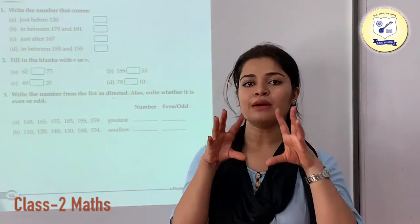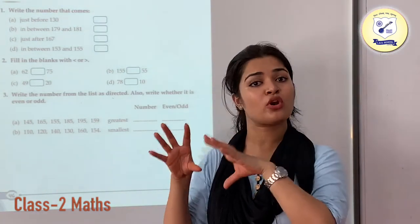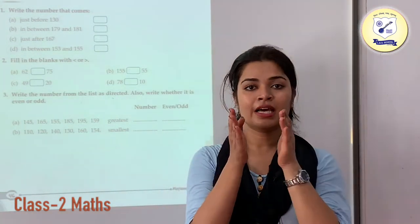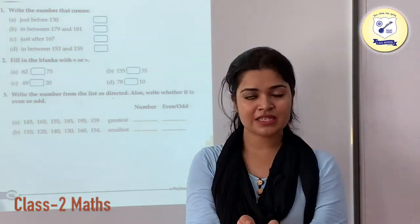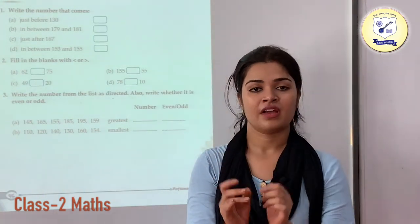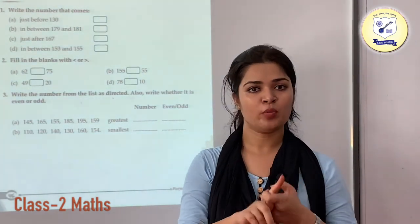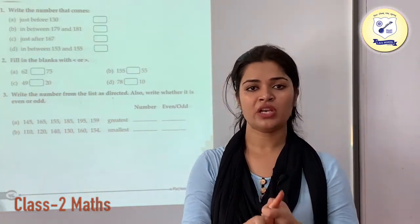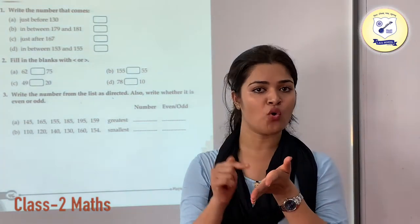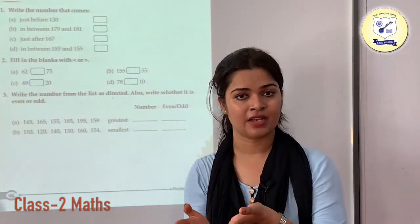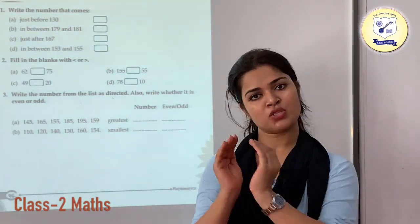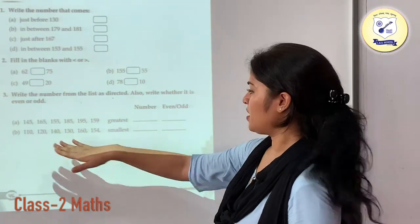Now tell whether 195 is even or odd. The ones place digit of 195 is 5. For a number to be even, we need 0, 2, 4, 6 or 8 at the ones place. But since we are having 5, that is going to be your odd number.